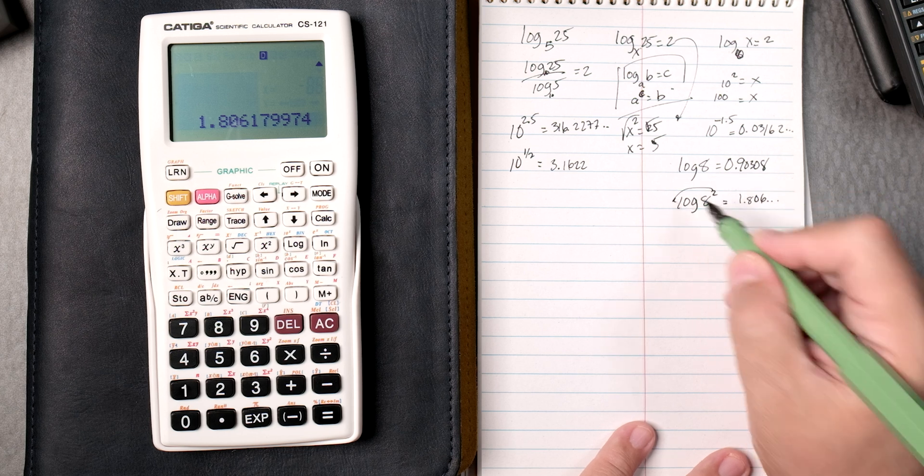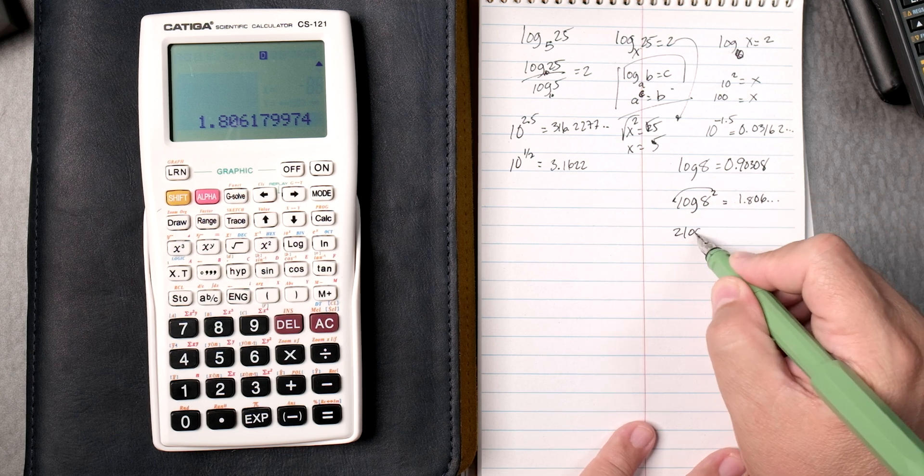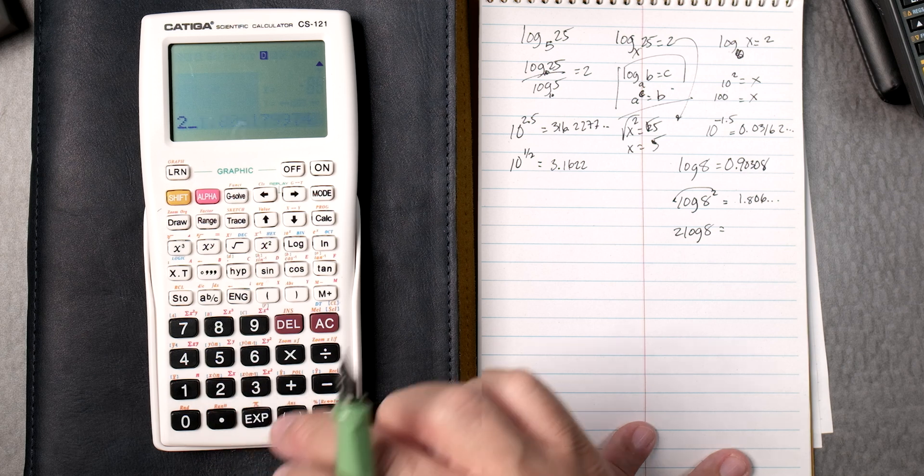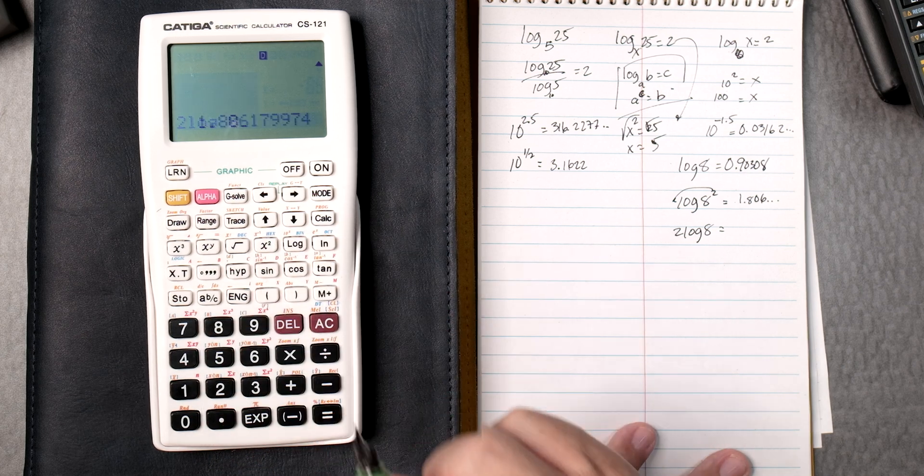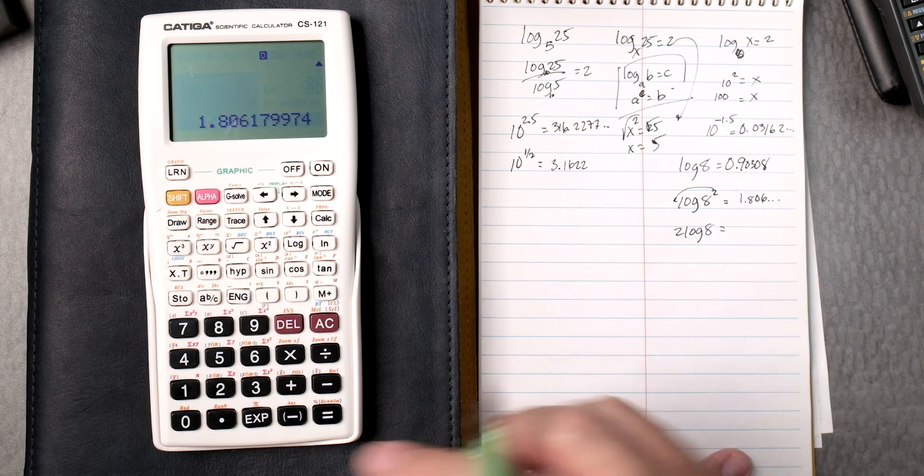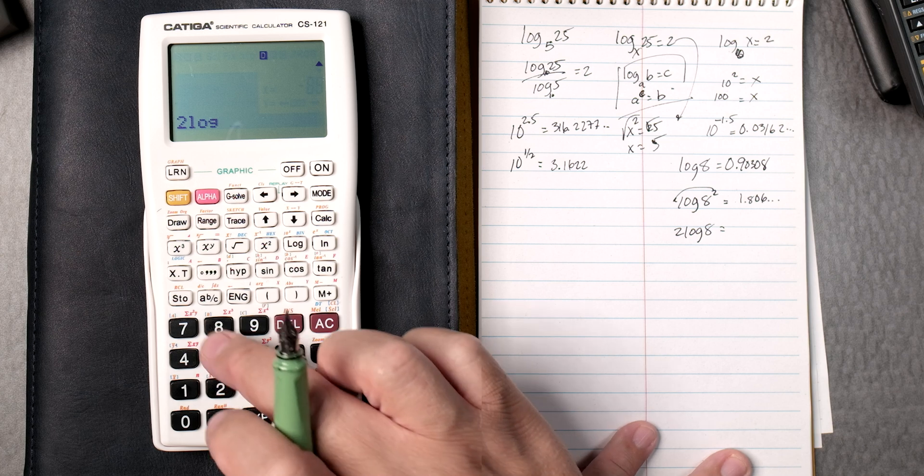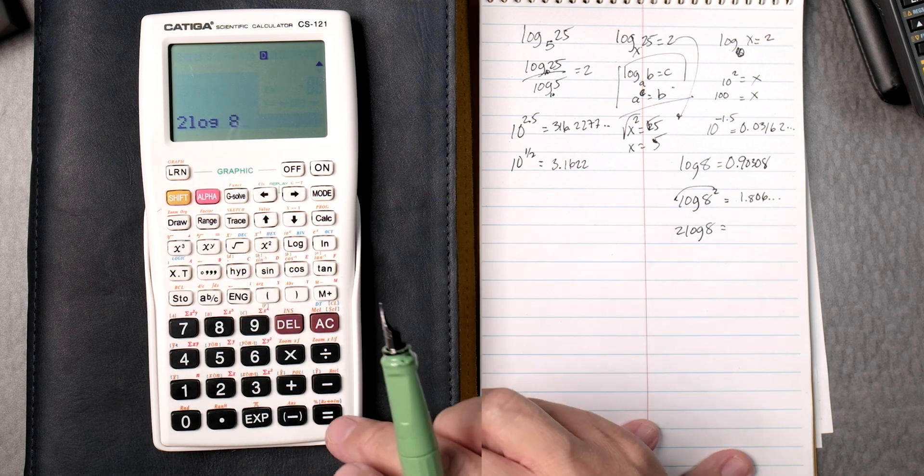There's a rule that says you can bring down the 2, so 2 log of 8. So we can calculate it differently. 2 log 8, 8, equals. When you say 2 log 8, the 2 automatically multiplies with the log and it gives you the same answer.